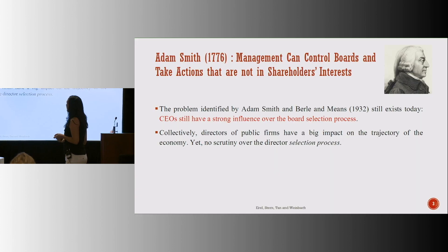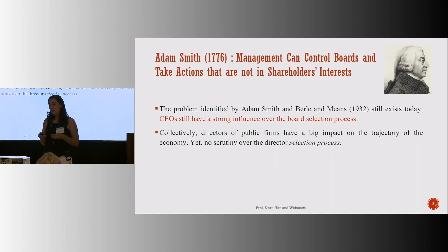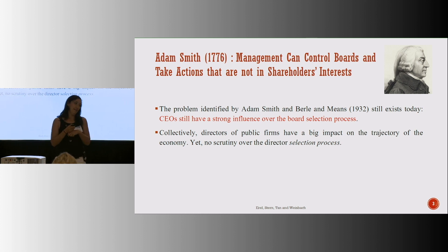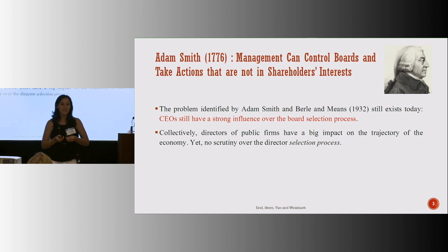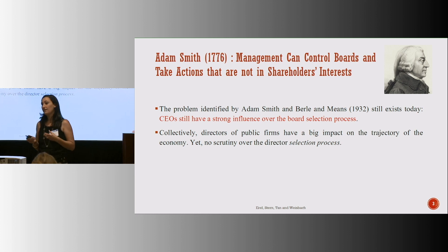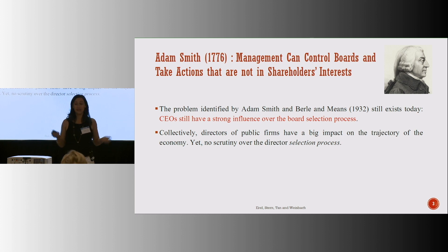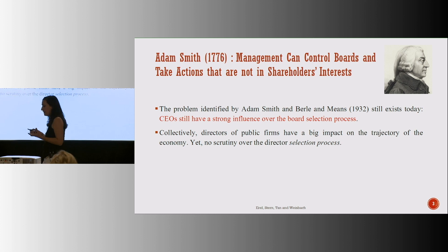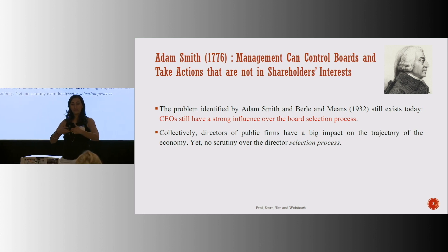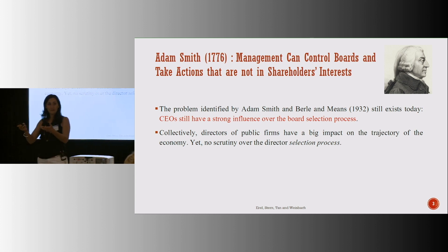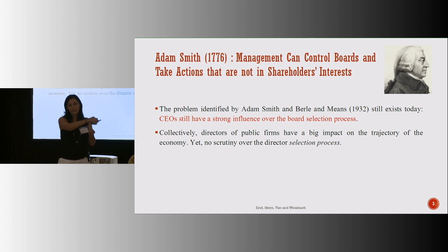We've known since Adam Smith and Berle and Means that we can expect this process to be plagued with agency issues. One big factor why that's the case is that the CEO typically is in charge — the CEO is in charge of deciding who is going to be the next director to sit at that table. And by way of motivating why this is important, consider collectively all directors — they play a non-trivial role in the trajectory of the economy because they are the ones who make the key decisions at every key inflection point during the firm's life.